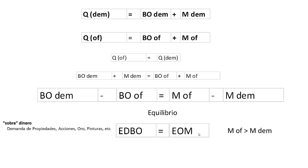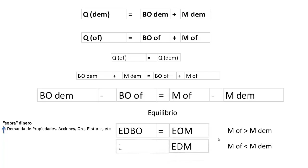¿Qué quiere decir esto? Que sobra dinero, entonces la demanda de bonos — propiedades, acciones, oro, pinturas — aumentará. Mientras que si sucede lo contrario, cuando la demanda de dinero es mayor a la oferta de dinero, hay un exceso de demanda de dinero, lo que implica un exceso de oferta de bonos, significando que hay faltante de dinero, lo que hará que disminuya la demanda de propiedades, acciones, oro, etc., que hemos llamado bonos.